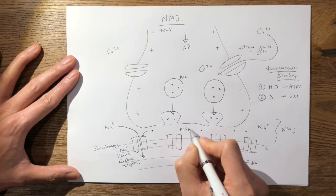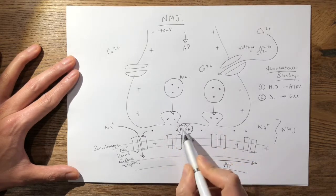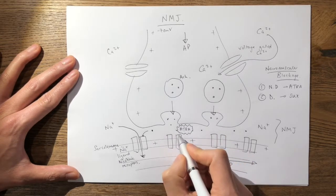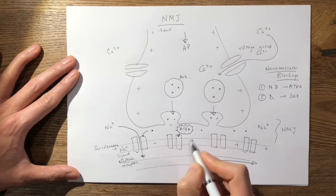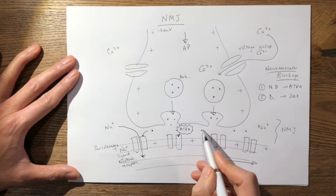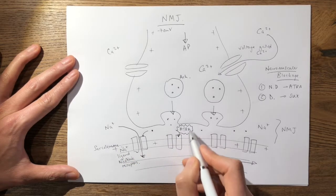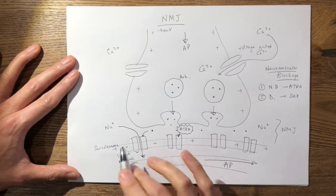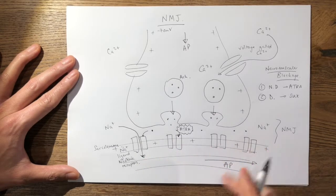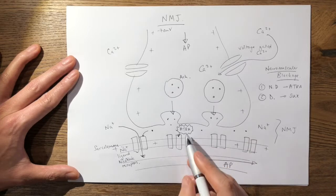The atracurium actually works on your sarcolemma at these sodium ligand-operated nicotinic receptors. What it does is that it competitively inhibits and binds onto these receptors preventing your normal endogenous acetylcholine to bind on to open these channels. Once the atracurium binds on it doesn't depolarize the sarcolemma, it just sits there therefore paralyzing the muscle. So that's how atracurium works.